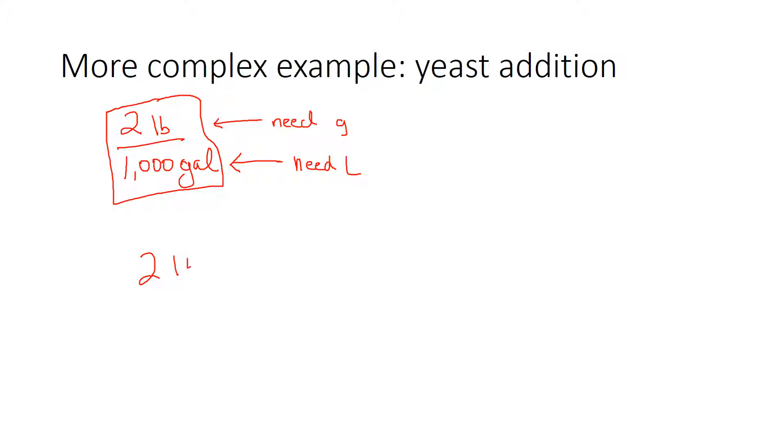So I can start with my two pounds per 1,000 gallons. And I just need two conversion factors. The first one converts grams to pounds. And if I look that up on Google, Google will tell me that it's 454 grams per pound.